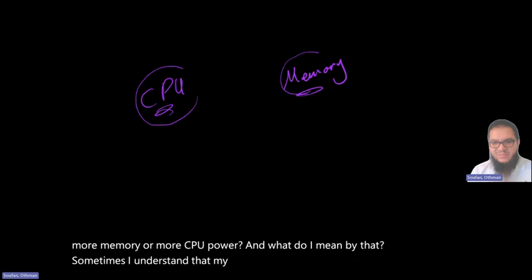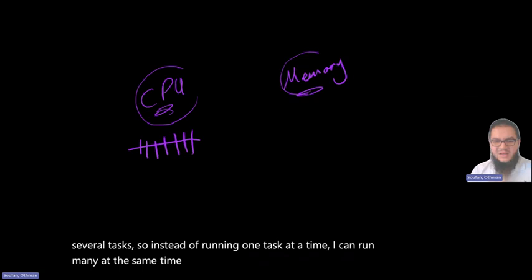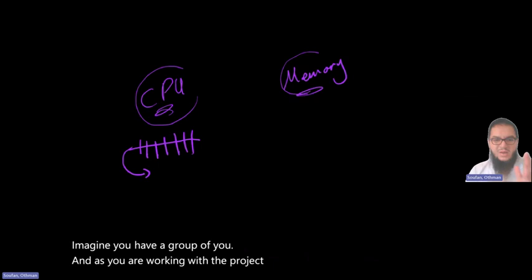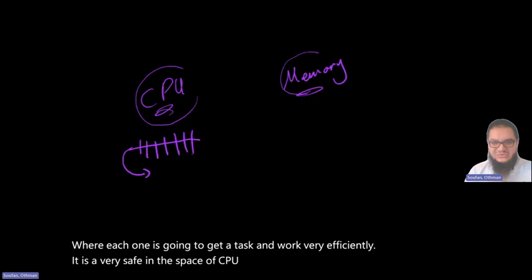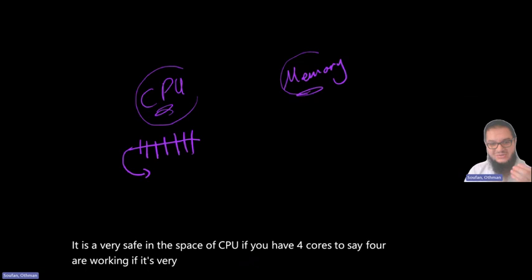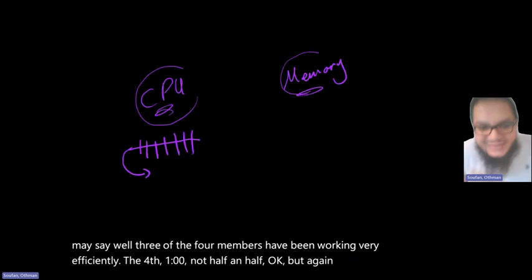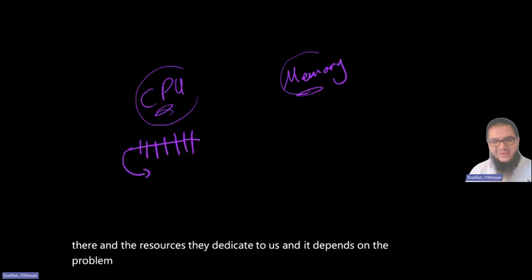Sometimes it is CPU intense. Sometimes it is memory intense. Sometimes it is both. Therefore, this discussion which just jumped right now is very relevant in this domain. Am I looking for more memory or more CPU power? Sometimes I understand that my task can be broken down to several tasks. So instead of running one task at a time, I can run many at the same time. Once they are done, I can move to the next step. Imagine you have a group of you working with the project now, where each one is going to get the task and work very efficiently. It is very safe in the space of CPUs. If you have four cores to say, four are working very efficiently.